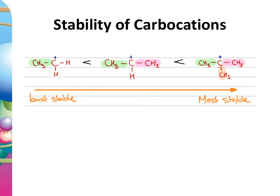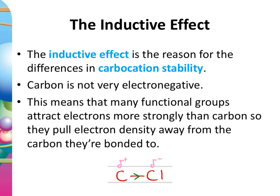Why that matters will become important when we look at the mechanism behind reactions involving alkenes. The difference in carbocation stability is down to something called the inductive effect — something you've already come across, although it may not have been termed that. When you studied bonding and polar bonds, you considered the difference in electronegativity between adjacent atoms. Electronegativity is the ability to attract a pair of electrons in a covalent bond, so a more electronegative atom draws electrons towards itself.